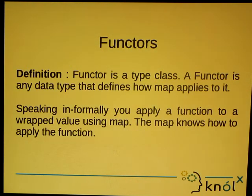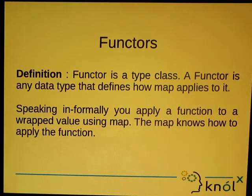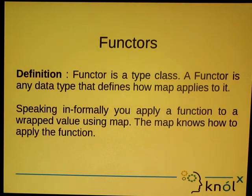If we talk in terms of definition, a functor is a type class and a functor is any data type that defines how map applies to it. There is no class, no trait called functor in Scala, but we still have functors in Scala because we have many data types which provide us with the implementation of the map method. Speaking informally, you can apply a function to a wrapped value using a map. The map knows how to apply that function and give you back the result.